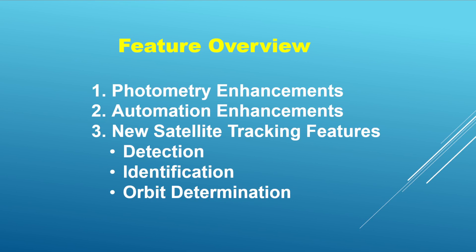Just a high-level overview of the three main categories of enhancements and features. First, we have photometry — for those who like to work with extended objects like comets, there is a new comet photometry module. Next, we have automation — for those who conduct sky surveys, there is a new module that makes it easier to automatically process incoming data sets as they arrive. And finally, a lot of new functionality around the ability to detect and measure artificial satellites, to include identification and orbit determination. This is a huge amount of new functionality that opens up a lot of new capability with the Tyco software.